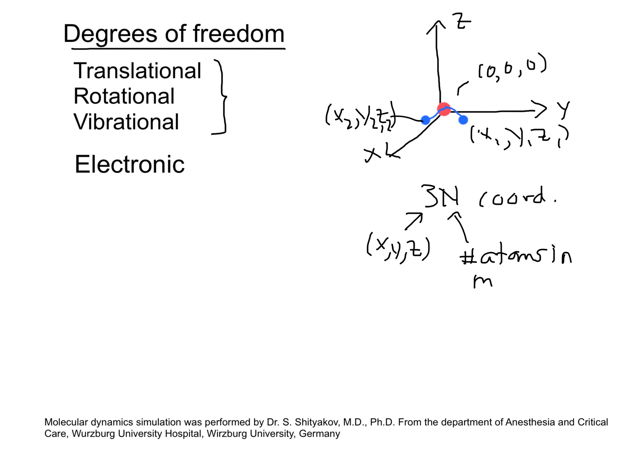and N is the number of atoms in the molecule. For water, we need nine total coordinates to specify where each atom is at every moment in time. If we can specify the position of each atom, then we can specify its translational, rotational, and vibrational motion at any given time.